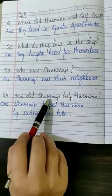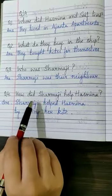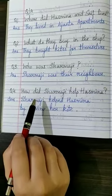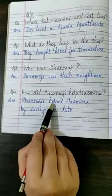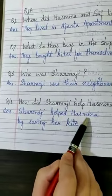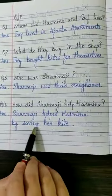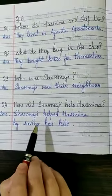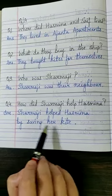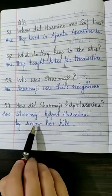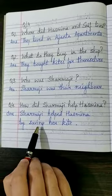How did Sharma ji help Hasmina? Sharma ji ne Hasmina ki help kaise ki thi? Sharma ji helped Hasmina by saving her kite. Us ki kite ko unhone save kiya tha — that means bachaya tha.